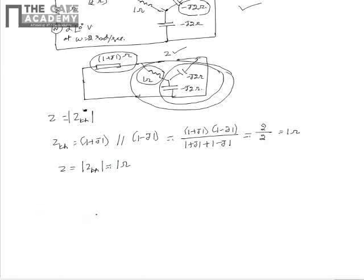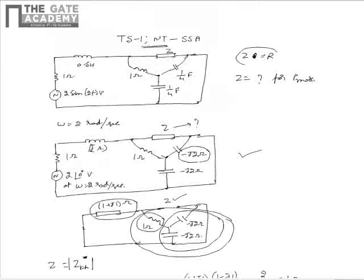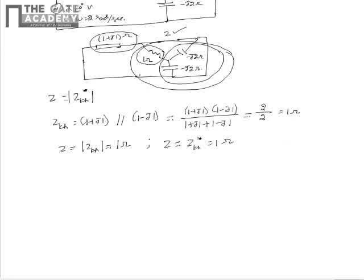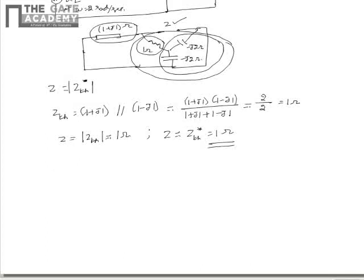Also please note that even if the load is not purely resistive, for maximum power transfer Z is equal to Zth conjugate is equal to 1 ohm. Please note that in the current problem, let the load be purely resistive or not purely resistive, the load impedance for the maximum power transfer can be expressed as 1 ohm. Hence the correct option is d.